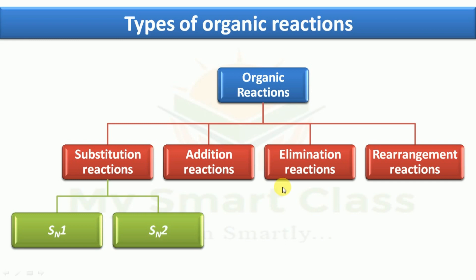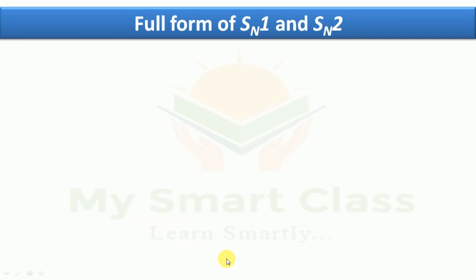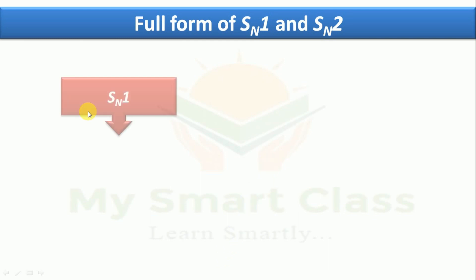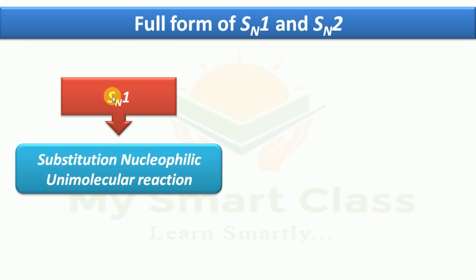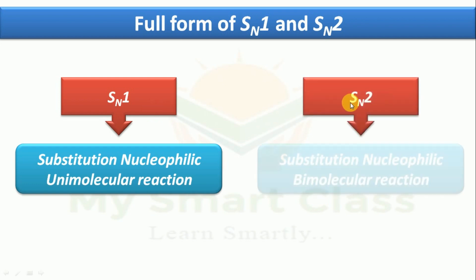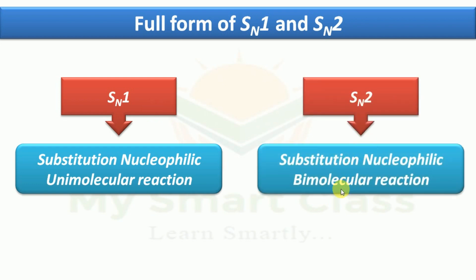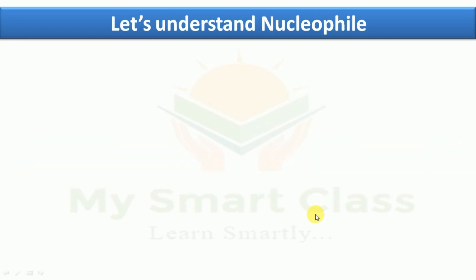So the full form of SN1 is: S stands for substitution, N stands for nucleophilic, and 1 stands for unimolecular reaction — 'uni' means one. Similarly, SN2 stands for substitution nucleophilic bimolecular reaction. Now let's understand what a nucleophile is.